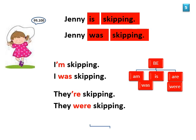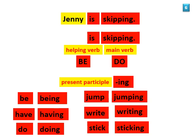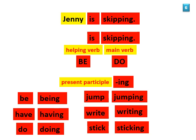The helping verb does all the work in the sentence — it changes to show the time or to show who's doing something. If you say 'Jenny is skipping,' it shows she is skipping now. If you say 'Jenny was skipping,' it shows she was skipping yesterday. If you say 'they were skipping,' it shows many people were skipping yesterday. To show continuous action, you add -ing to the main verb. A main verb with -ing attached is called the present participle. You just stick -ing onto the main verb: be → being, have → having, do → doing, jump → jumping, write → writing. When the main verb is a present participle, the helping verb is always a be verb.